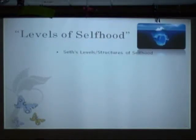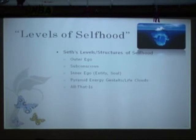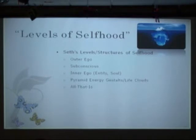Here are Seth's levels and structures of selfhood as I understand them. The outer ego is what is projected into framework one. There's a subconscious layer, an inner ego. He talks about these life clouds and also pyramid energy gestalts. I'm not sure if they are exactly the same thing or actually different layers, if the pyramid energy gestalt may be synonymous with all that is, and the life cloud may be a fragment further more towards physical development.